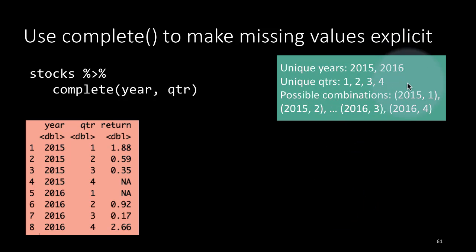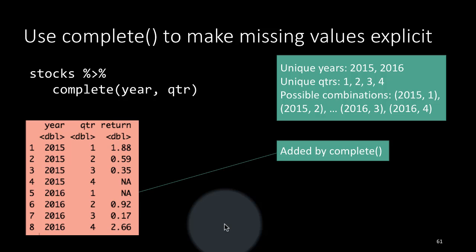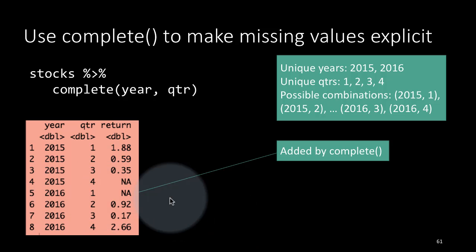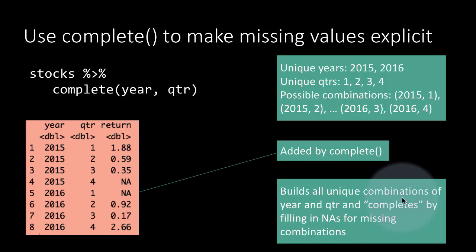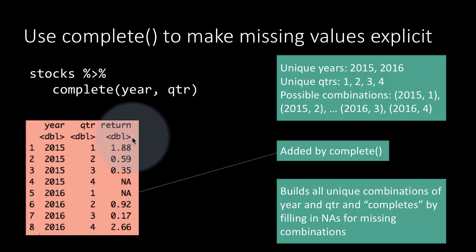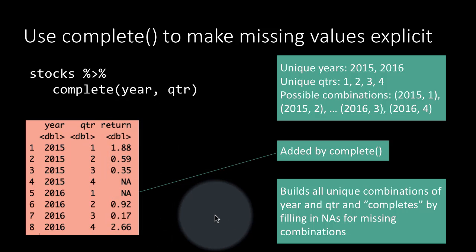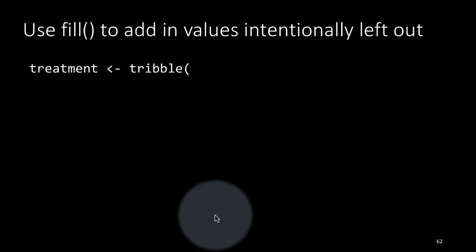The unique years are 2015-16, the unique quarters are 1, 2, 3, 4, so there are eight possible combinations. Seven of them occurred, one was already an NA, so the eighth one was what has got added by the complete function—2016 quarter one was added. The way it's going to work is it's going to build all the unique combinations of year and quarter and then it completes by having one row for every such combination.